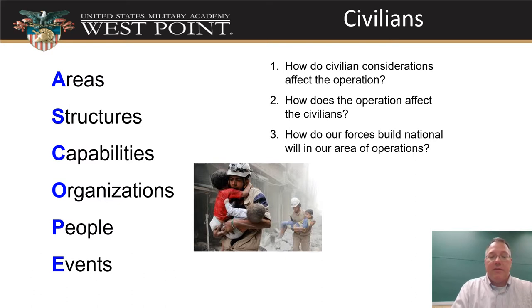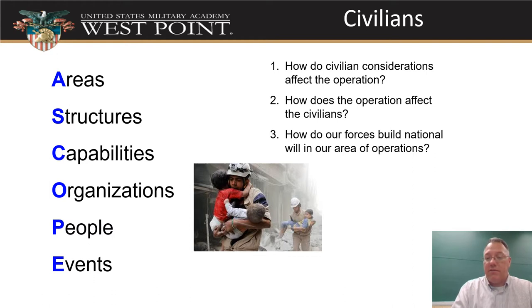For civilians on the battlefield, know the acronym ASCOPE: area, structures, capabilities, organizations, people, and events. In your analysis, answer questions like: How do civilian considerations affect your operation? How do your operations affect the civilians? And how do our forces build better will and relationships within our area of operations with the civilians? Those are the kinds of things you should address in your civilian analysis.